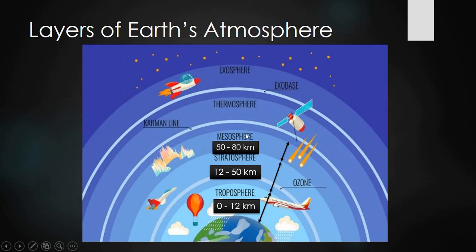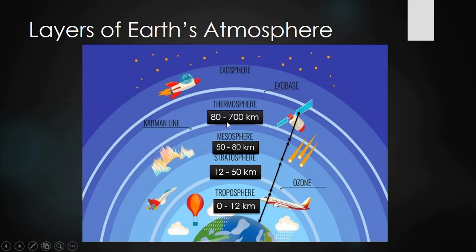After the mesosphere comes the thermosphere. Our satellites are located within the thermosphere. It also contains another notable layer called the Kármán line — just as the ozone layer is within the stratosphere. The range of the thermosphere is from 80 km to 700 km.